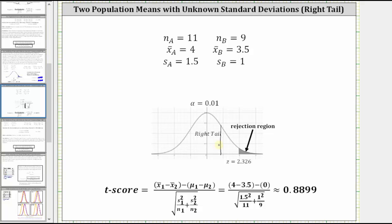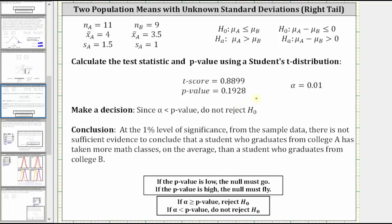Let's come to the same conclusion comparing the p-value and alpha. Notice how the p-value is high or greater than alpha, and because the p-value is high, the null must fly. Or more formally, because the p-value is greater than alpha, or because alpha is less than the p-value, we do not reject the null hypothesis.